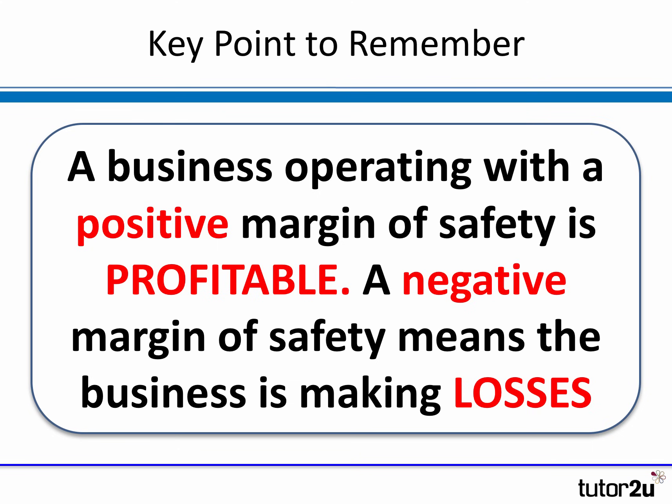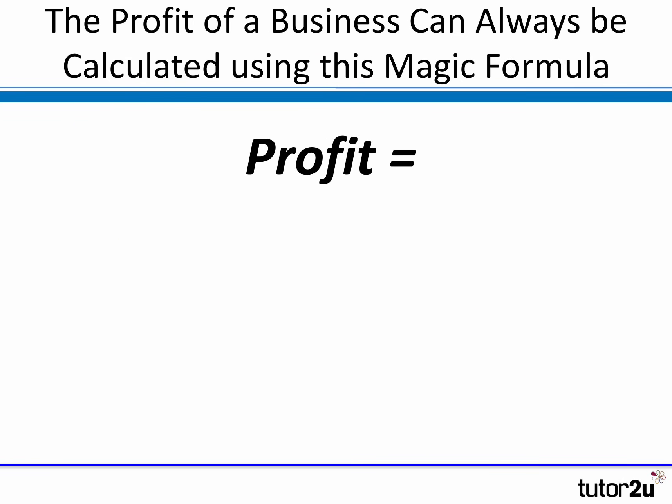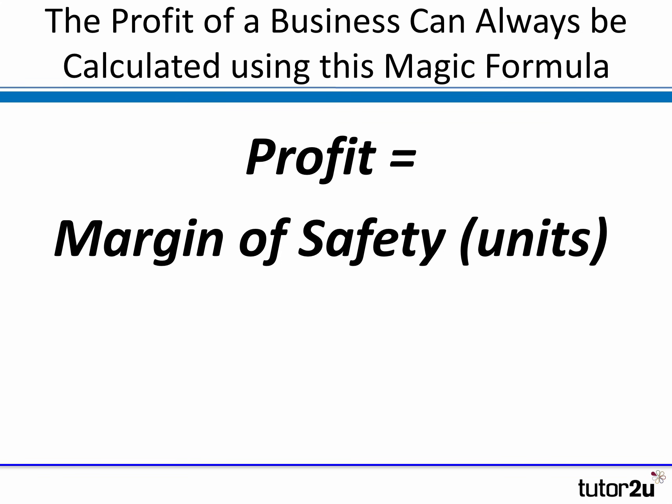A business that operates with a positive margin of safety is profitable. On the flip side, a negative margin of safety means the business is making losses. In order to be profitable you have to have a positive margin of safety — what you're actually selling or producing is greater than the break-even output. The beauty of this is that you can always prove the profit of a business using what we call the magic formula: profit is the margin of safety in units...